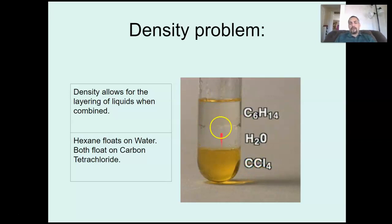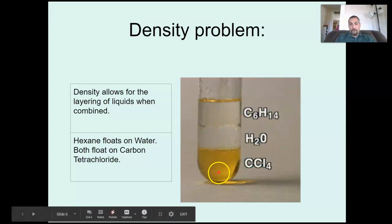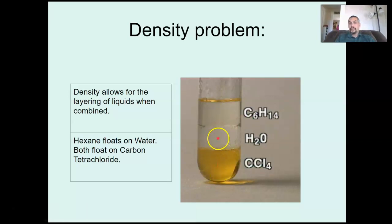The more dense a liquid is, the further down it will sink. The lighter the density, the more it will float up. So in this case, hexane is less dense than water. So it floats on top of it. Water is less dense than carbon tetrachloride. So it floats on top of that.